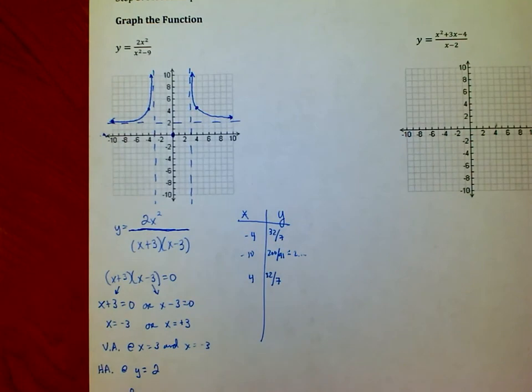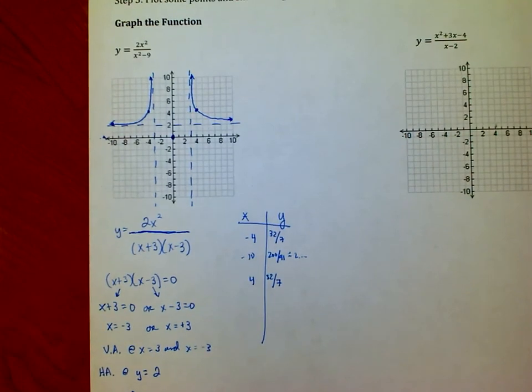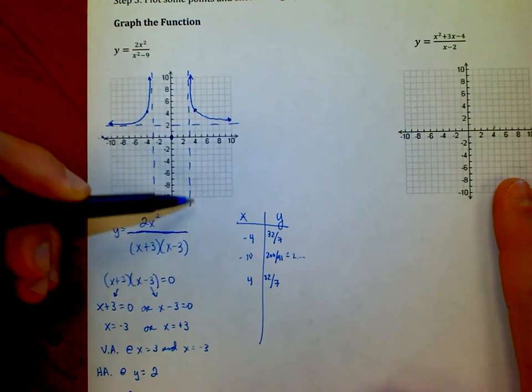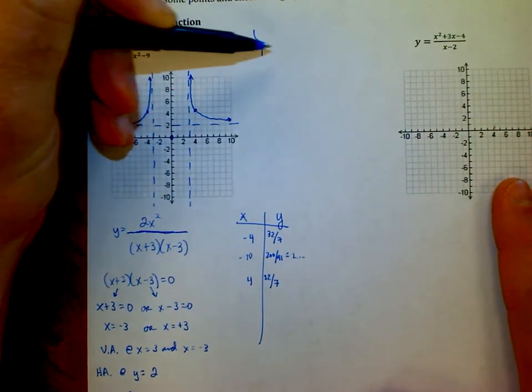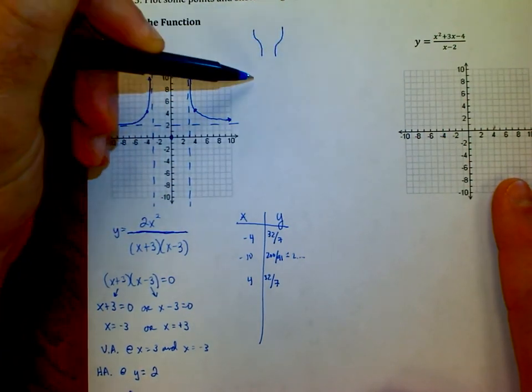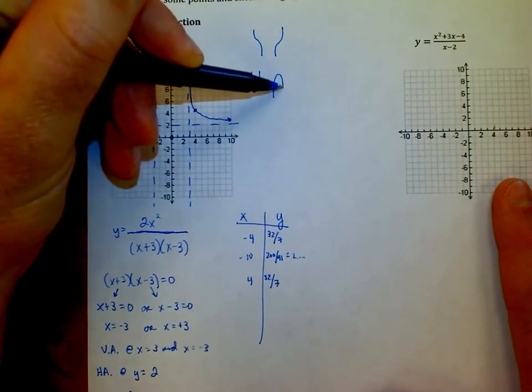So now that leaves the middle section. The options I have for the middle section, I could either start at the top and go down to the bottom. So I could either have something that looks like this, or something that looks like this, or something that looks like this, or something that looks like this.